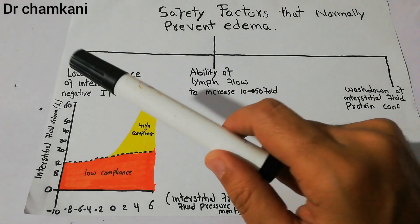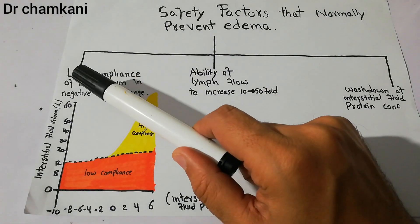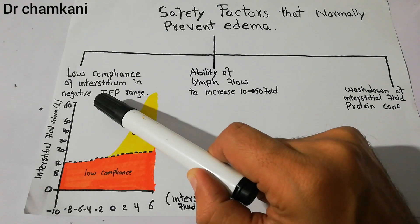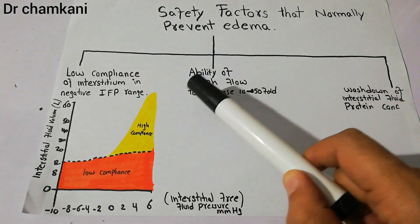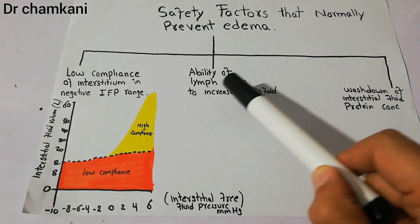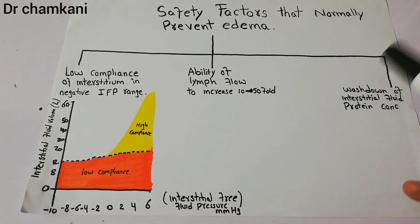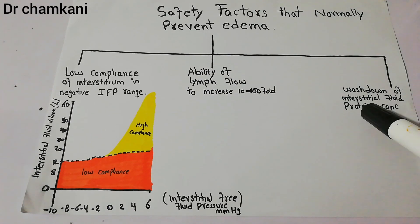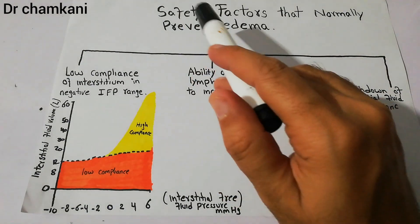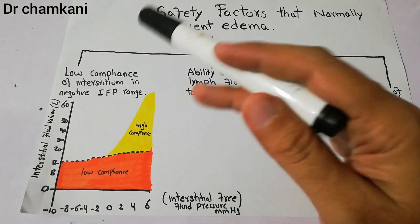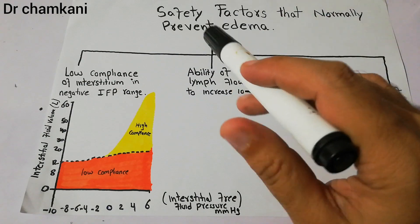There are three main safety factors which normally prevent edema. The first factor is low compliance of interstitium in the negative interstitial fluid pressure range. The second factor is the ability of lymph flow to increase 10 to 50 fold. The third factor is the washdown of interstitial fluid protein concentration. We will discuss the first factor in detail in this lecture and the remaining factors in coming lectures.